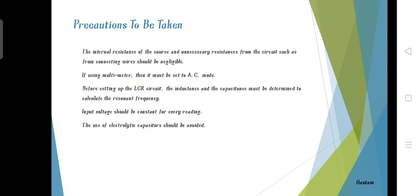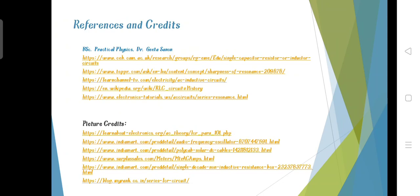Precautions to be taken: The internal resistance of the source and unnecessary resistance from the circuit such as the connecting wire should be negligible. If using multimeter, then it must be set to AC mode. Before setting up the LCR circuit, the inductance and the capacitance must be determined by calculating the resonant frequency. Input voltage should be constant for every reading. The use of electrolytic capacitors should be avoided.